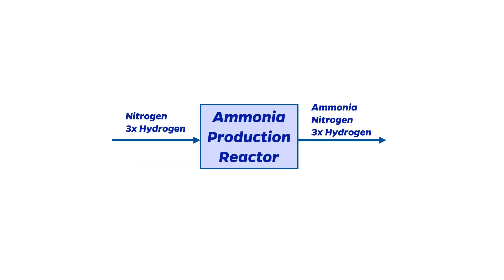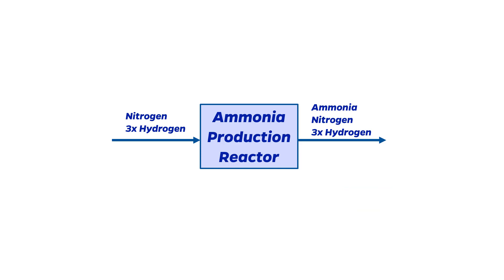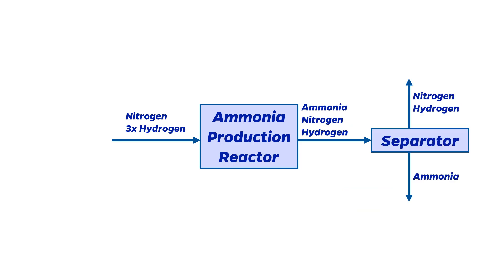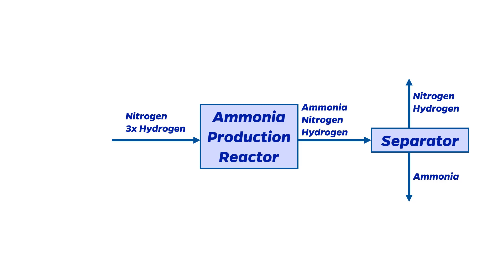Without worrying too much about how the reaction occurs, but acknowledging that nitrogen is usually an inert gas that doesn't easily react, we have to deal with the possibility that there will be some unreacted reactants in our product stream. We can get rid of these by sending the whole stream to a separator, and then we will get pure ammonia product in one stream, and a mixture of nitrogen and hydrogen in another stream. Of course, none of this is as easy as it sounds, but these are details that we'll get to later on.